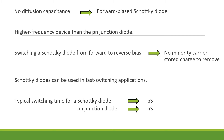Also, when switching a Schottky diode from forward to reverse bias, there is no minority carrier stored charge to remove. But in the case of a P-N junction diode, we have to remove the stored minority carrier charge. Since there is no minority charge storage time, Schottky diodes can be used in fast switching applications. A typical switching time for a Schottky diode is in the picosecond range, while that of a P-N junction diode is normally in the nanosecond range.